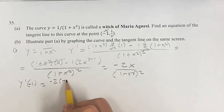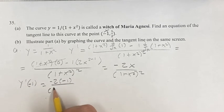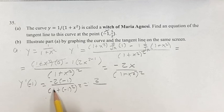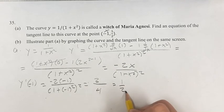So plugging that in, we get negative 2 times negative 1 over 1 plus negative 1 squared squared. Negative 2 times negative 1 is 2 over 1 plus 1 squared is 2 squared is 4, which gives us a slope of 1 half.